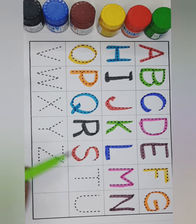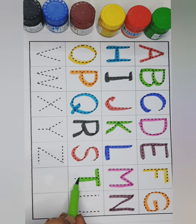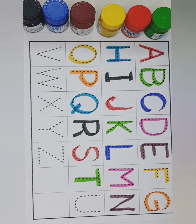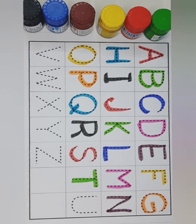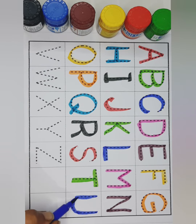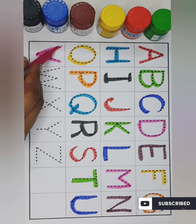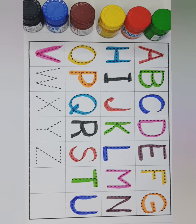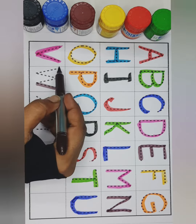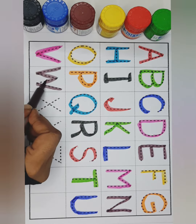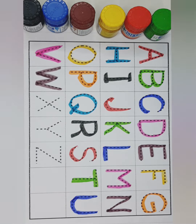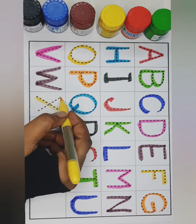Green color, T, T for tiger. Blue color, U, U for umbrella. Pink color, V, V for van. Brown color, W, W for watch. Yellow color, X, X for x-ray.